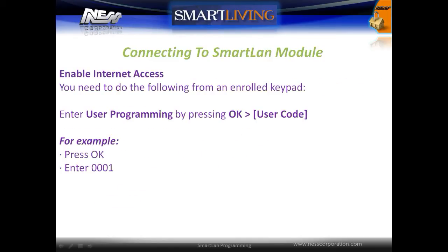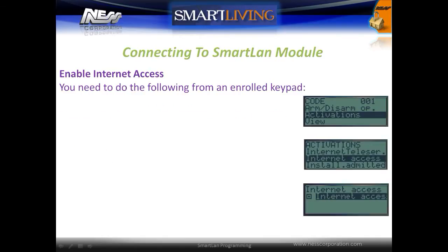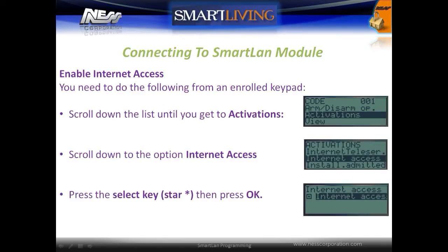We must set the enable internet access option to allow remote connection to the panel. To do this, enter user programming mode via the system keypad by pressing OK and entering a user code. Scroll down the list and find the Activations menu. Locate the Internet Access option, then use the star key to select it and press OK to save.